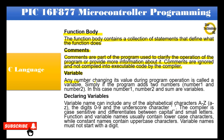Any number changing its value during program operation is called a variable. Simply, if the program adds two numbers, number1 and number2, then number1, number2, and the sum are variables.